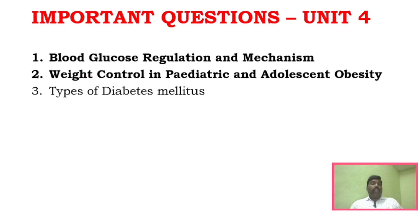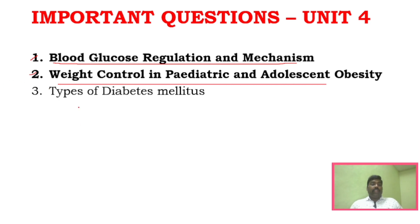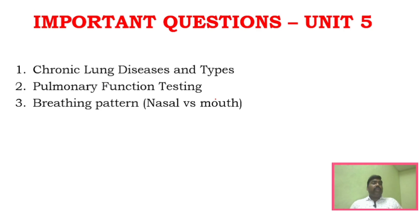For unit 4, you need to study only 3 questions. The two most important questions are blood glucose regulation and mechanism, and weight control in pediatric and adolescent obesity. Types of diabetes mellitus is also a very very important area, so prepare these 3 questions for unit 4. For unit 5, focus on chronic lung disease, pulmonary function, and breathing pattern — 3 questions from this unit.